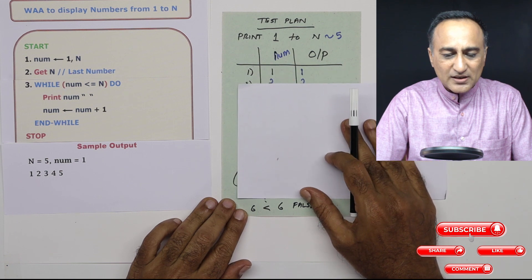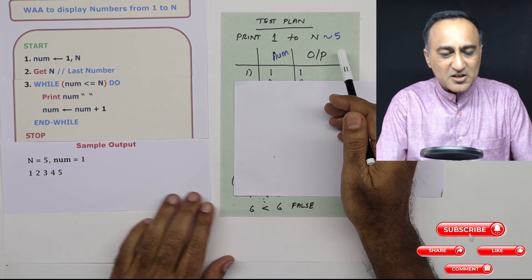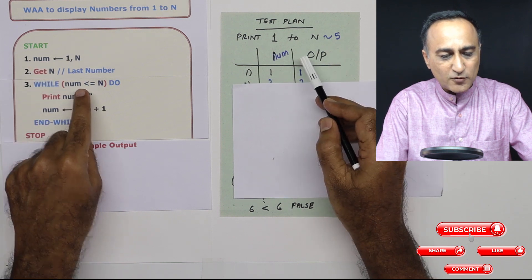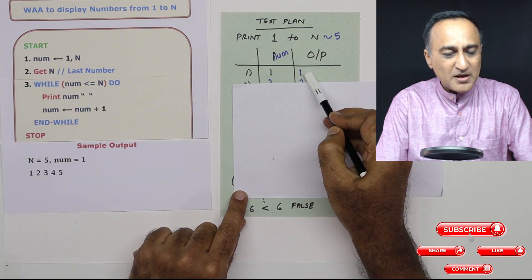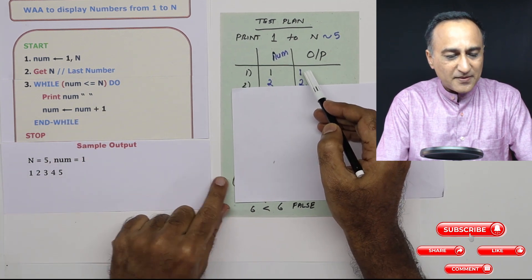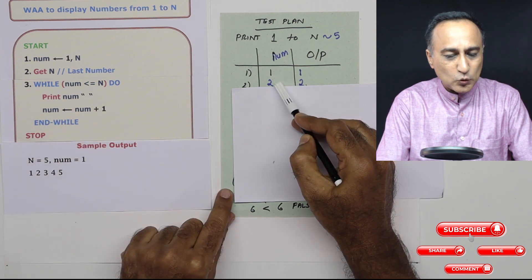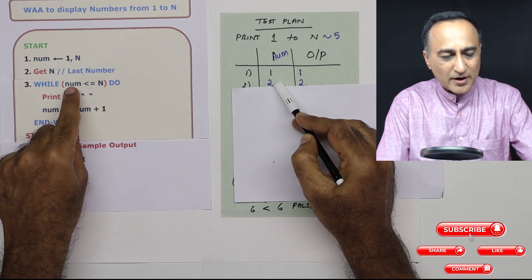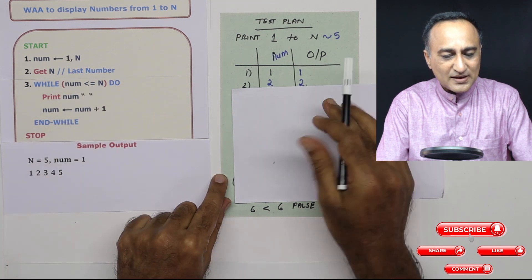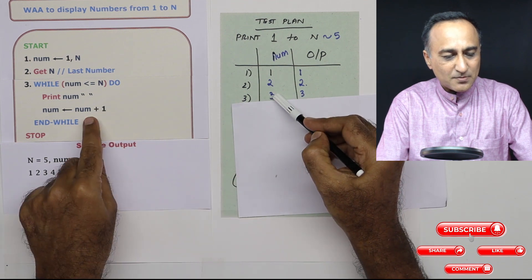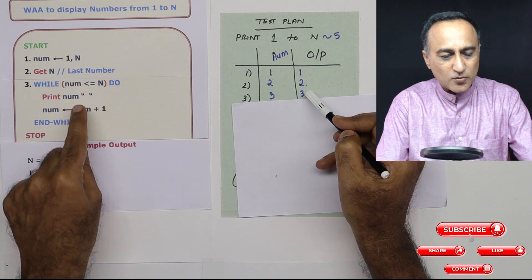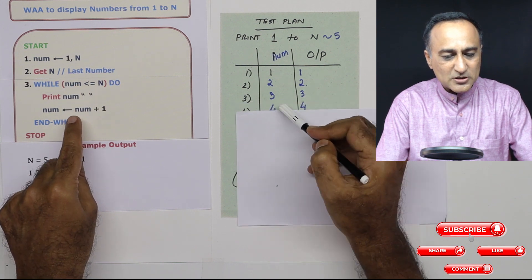So take a look at how the program will look. Initially number is one. This condition is true, one is less than or equal to five, output is going to be one. Then the minute one has been printed, number is increased by one, number becomes two. Once number becomes two, I go back here. Two is less than or equal to five. Then I am printing two, next step number becomes three. Then I go back here. Three is less than or equal to five is true. I'm going to print three, then number becomes four.